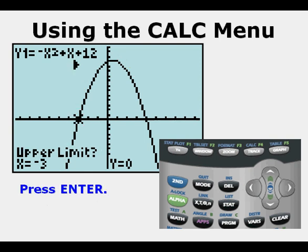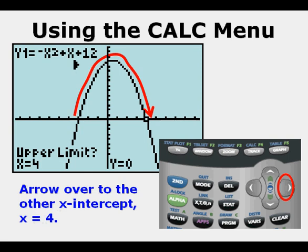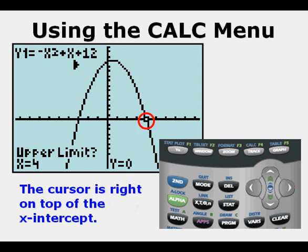The calculator is now asking for the upper limit. Arrow over to the right. Arrow all the way to the other x intercept x equals four. The cursor is right on top of the x intercept of four. Press enter.